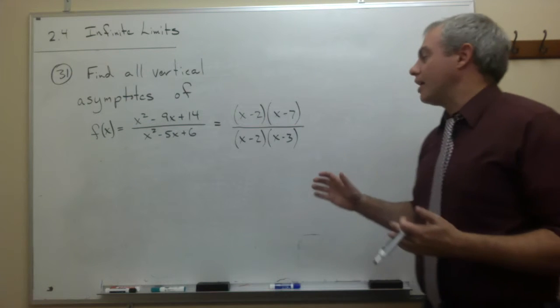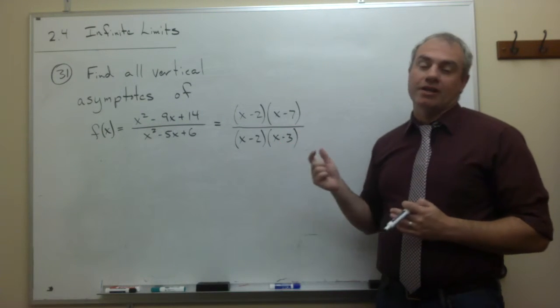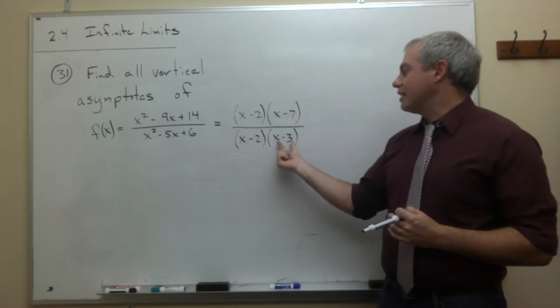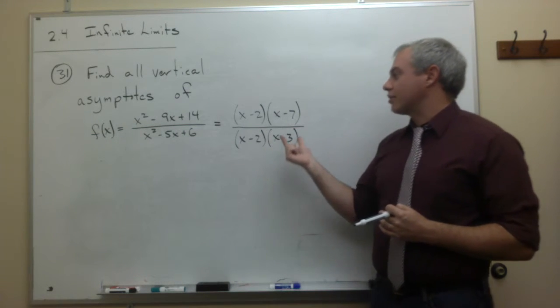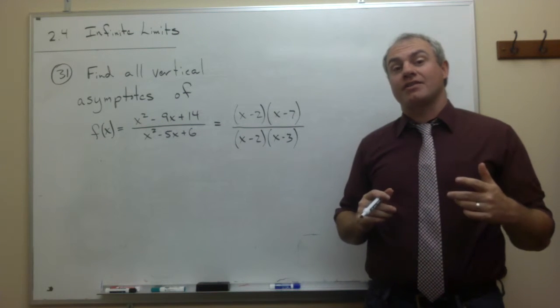Now, the other factor that I have on the bottom of this fraction is x minus 3. And now I need to ask the question, is there an x minus 3 on the top to cancel it out? In this case, the answer is no.